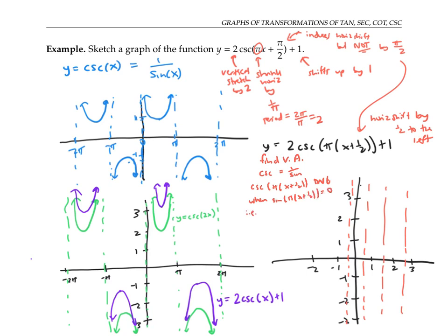That is, when pi times x plus one half is equal to a multiple of pi. Canceling the pis and solving for x, that's when x is some number minus a half.